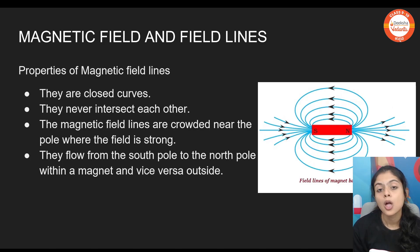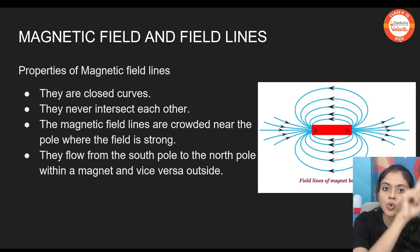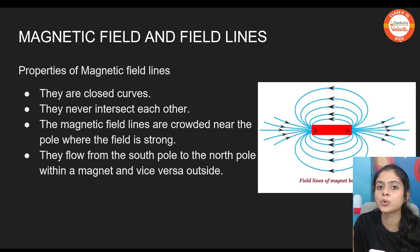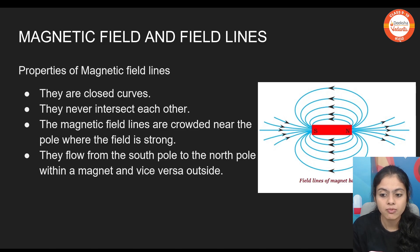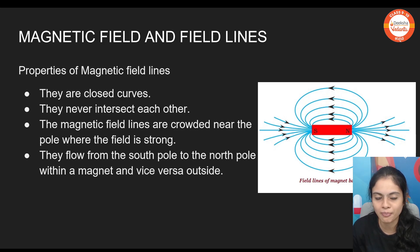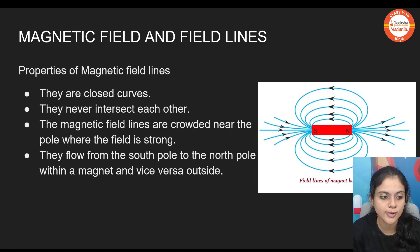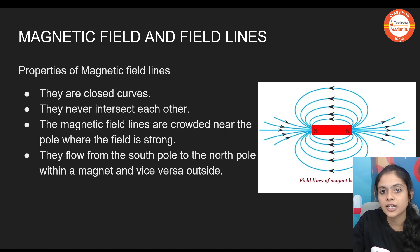Properties of magnetic field lines: First, they form a closed curve — the line emerges from north to south on the outside, and inside it moves from south to north, covering a closed loop. Second, field lines will never intersect each other — if they crossed, they would show two different directions, which is not possible. Third, the magnetic field lines are crowded near the poles where the field is strong. They flow from south to north inside the magnet.